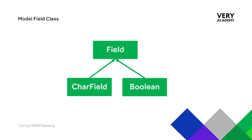Ultimately this allows us to avoid duplicating any code. We don't necessarily need to know all the specifics of the field class, just that everything descends from it, and within each individual field there are certain customizations which build the characteristics that make up the individual Django field types.